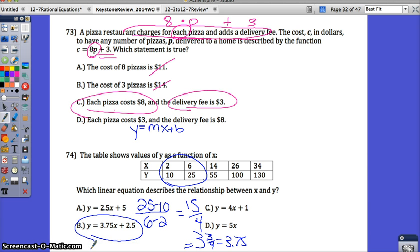Which equation then has a slope of 3.75? B. B is the correct answer. You could check that B is the correct answer by plugging in one of these points in for X and Y and seeing if it works. You can plug in all of them, you can plug in one of them, but B is the correct answer because it has the same slope.